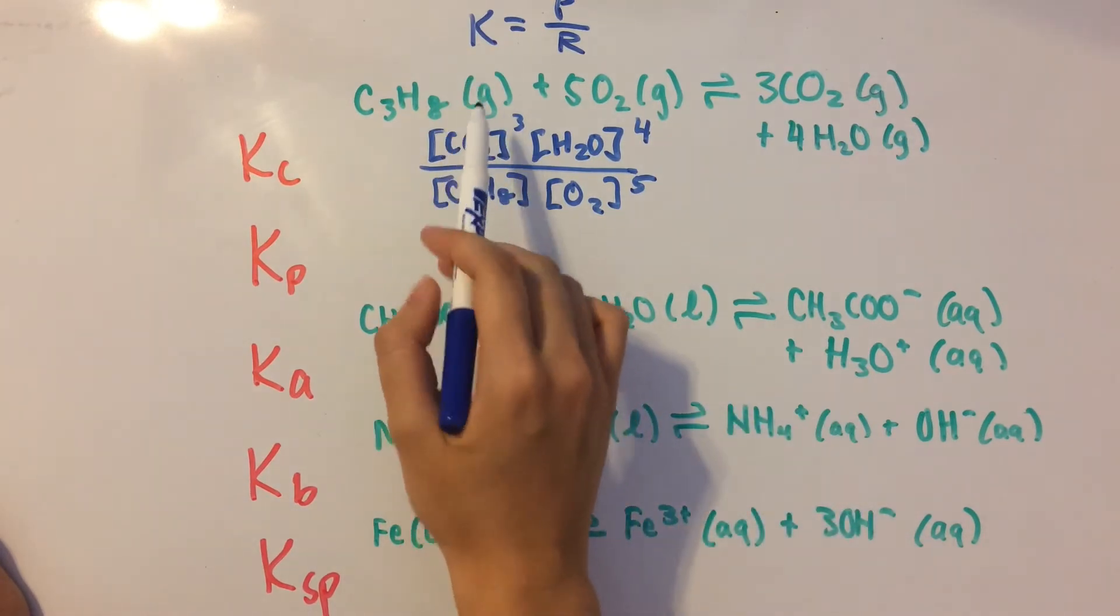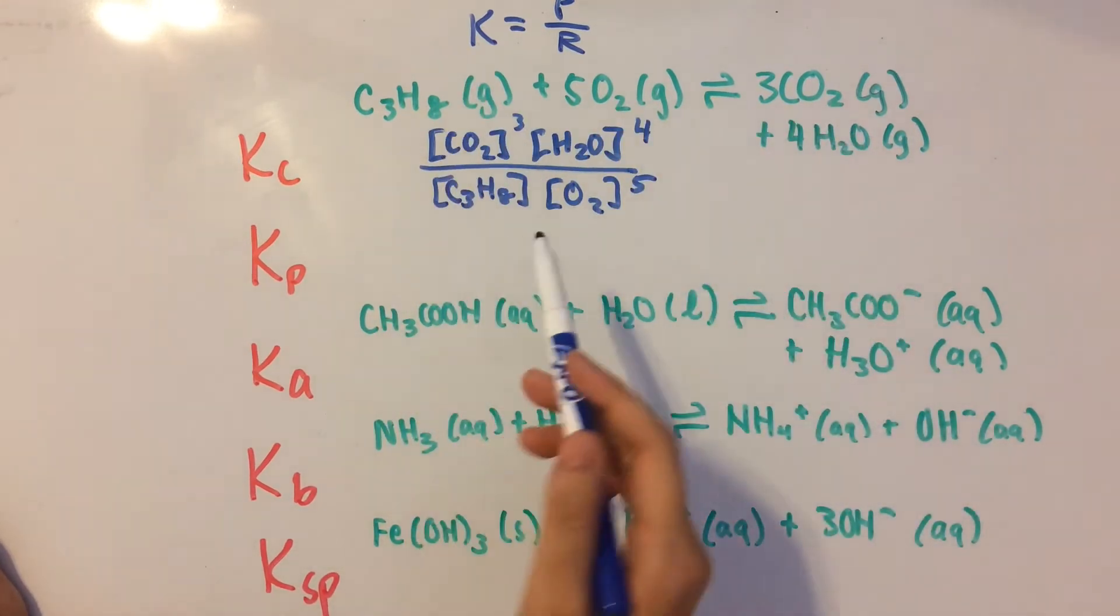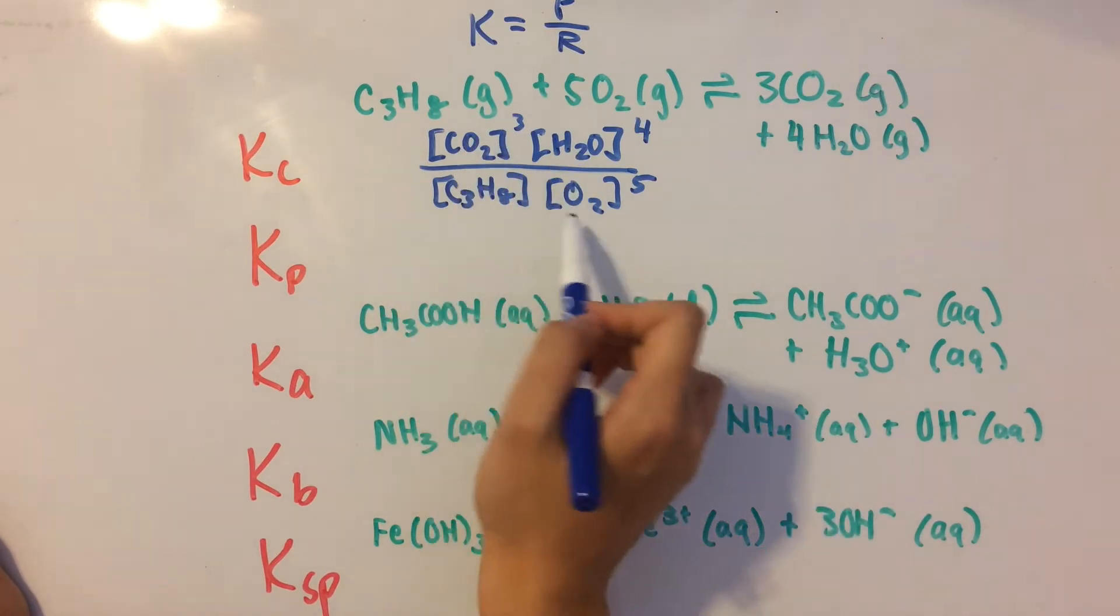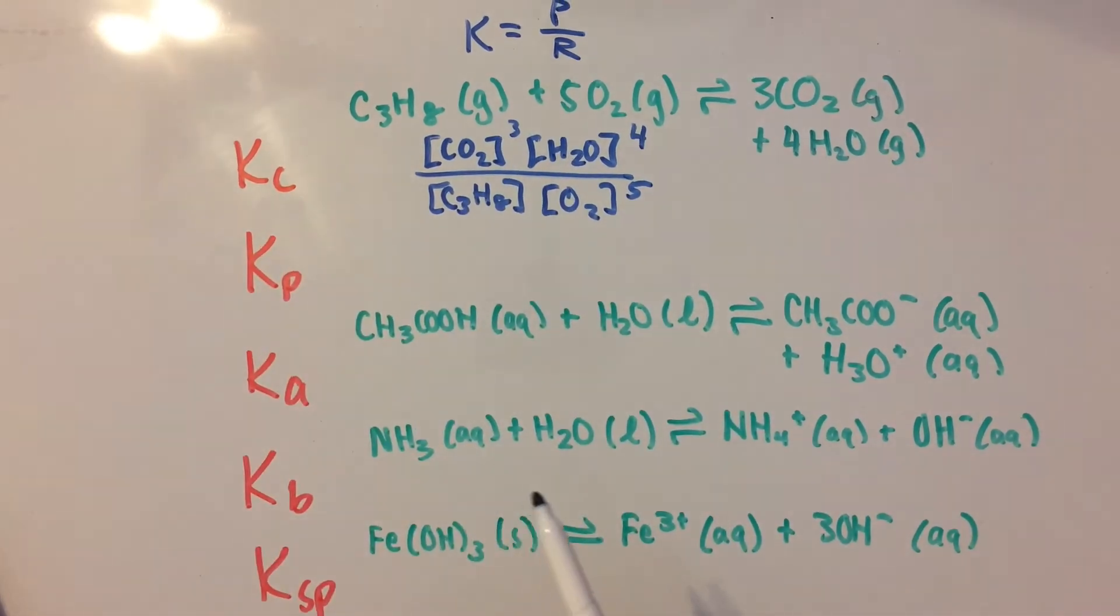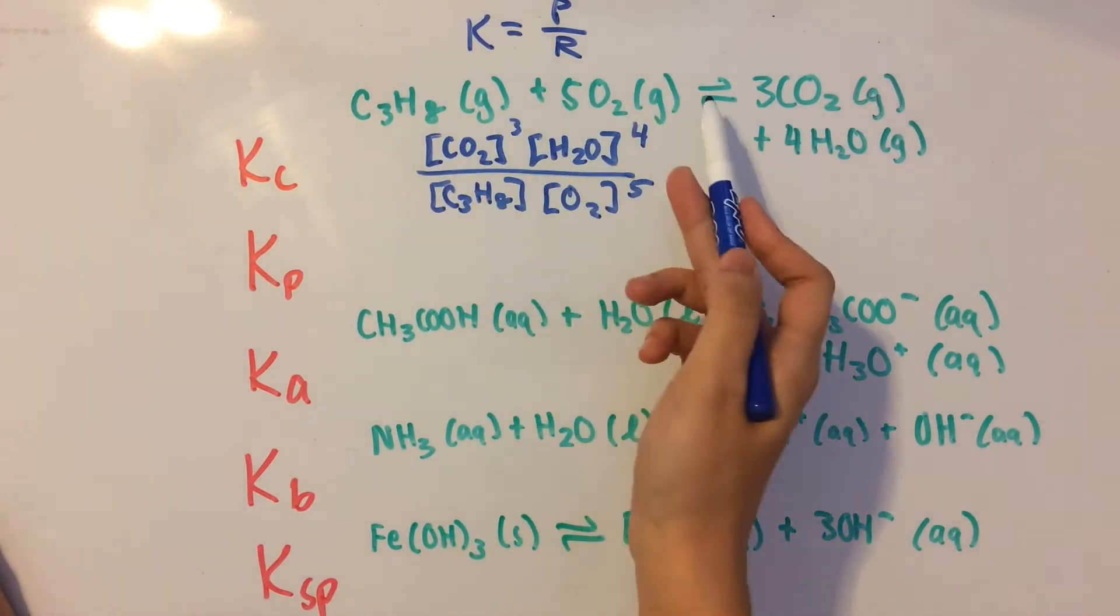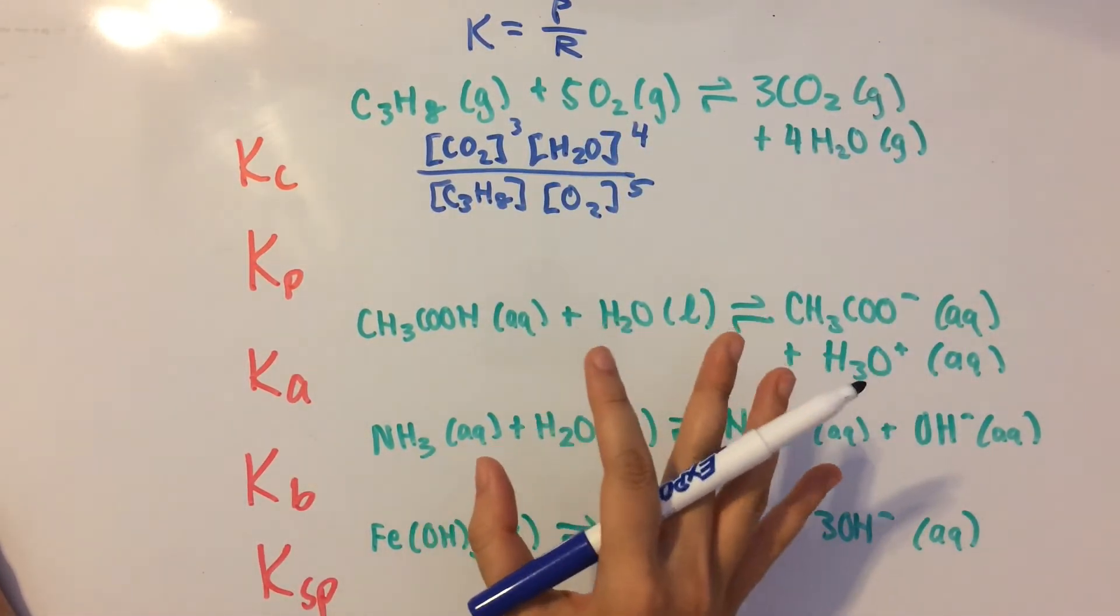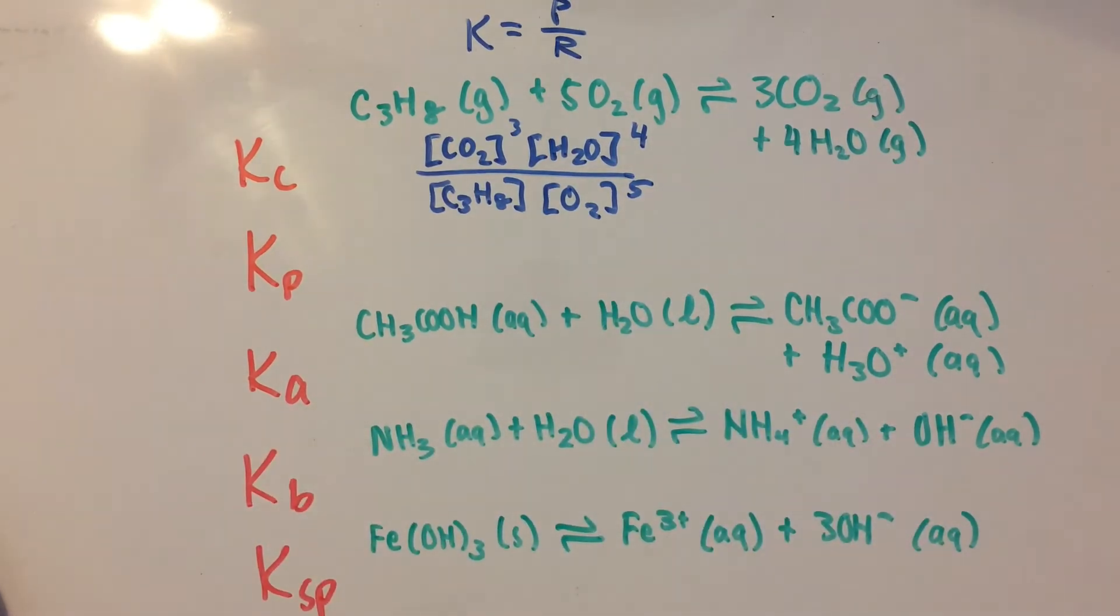So because these are all gases, you can find the concentration of a gas, so it makes sense to write them in the Kc equilibrium expression. But if you have solids or pure liquids, you can't really find the concentration of those, so you would just leave them out of the equilibrium expression.